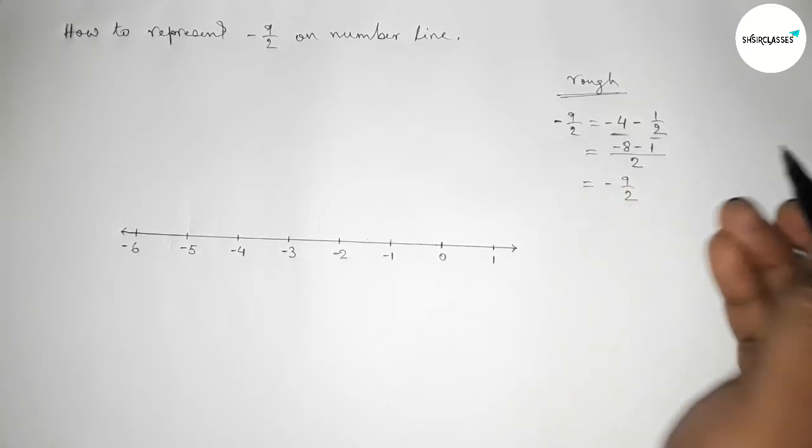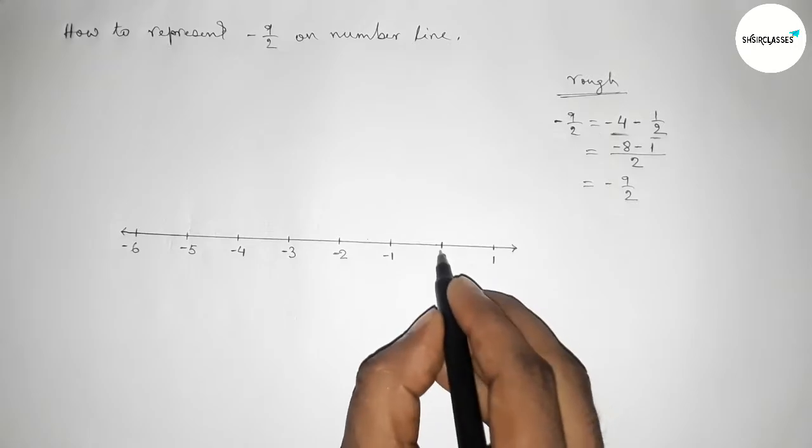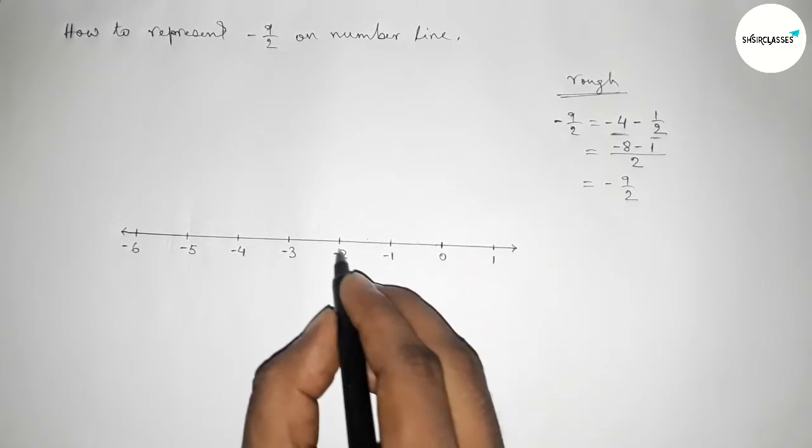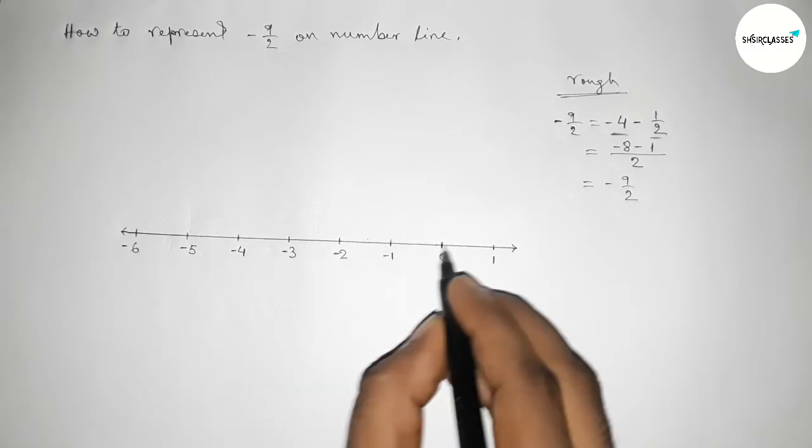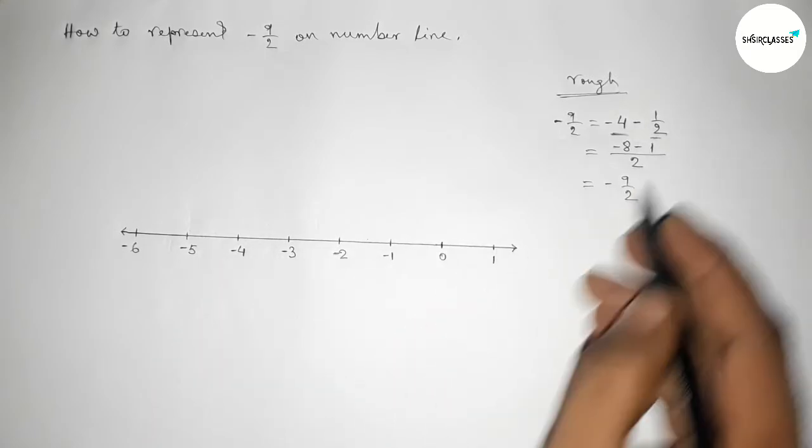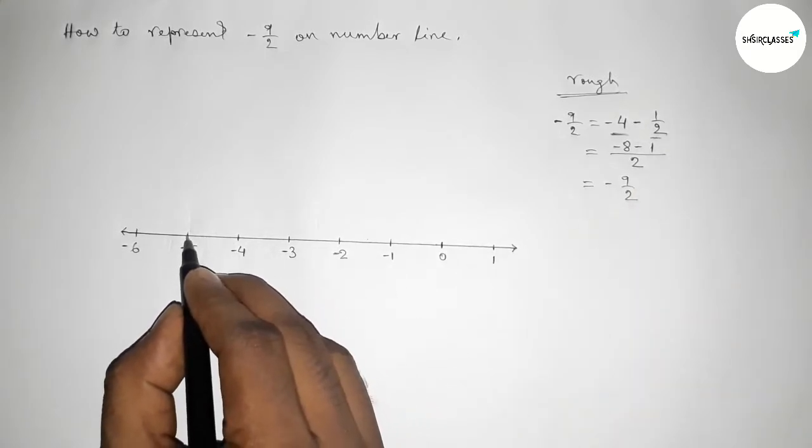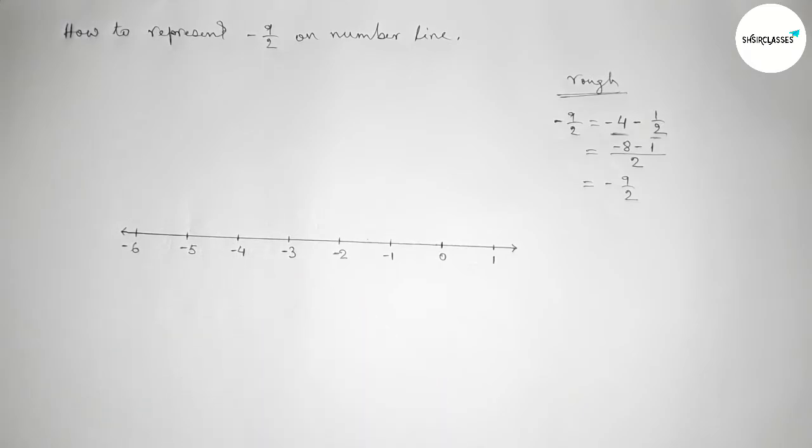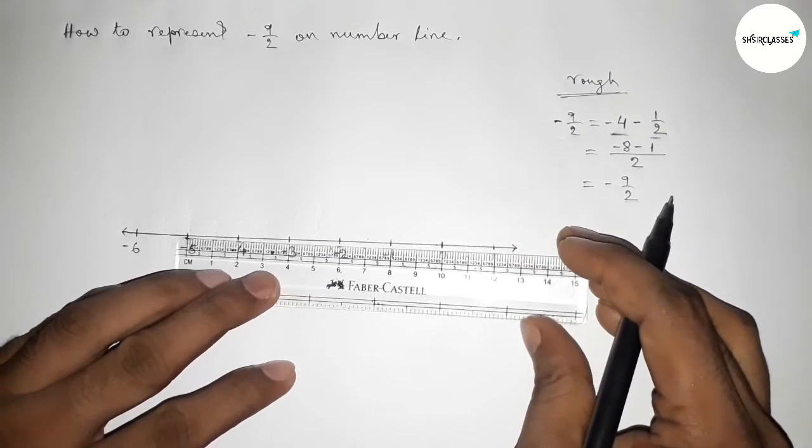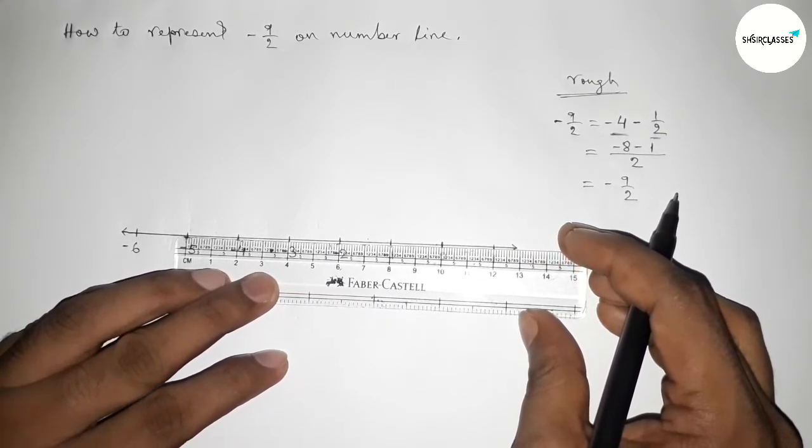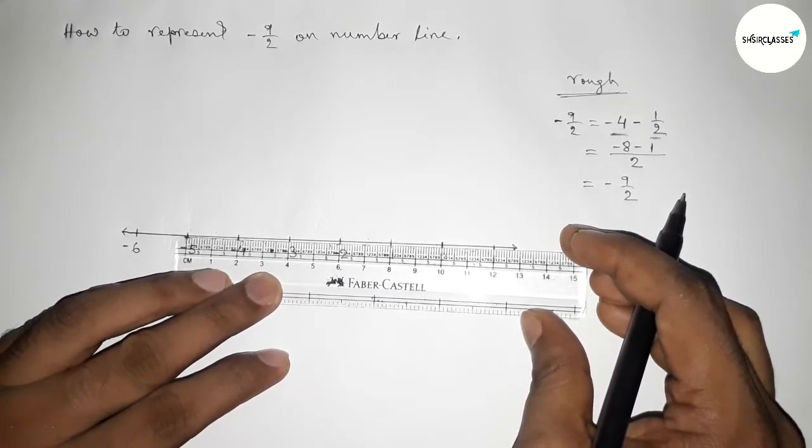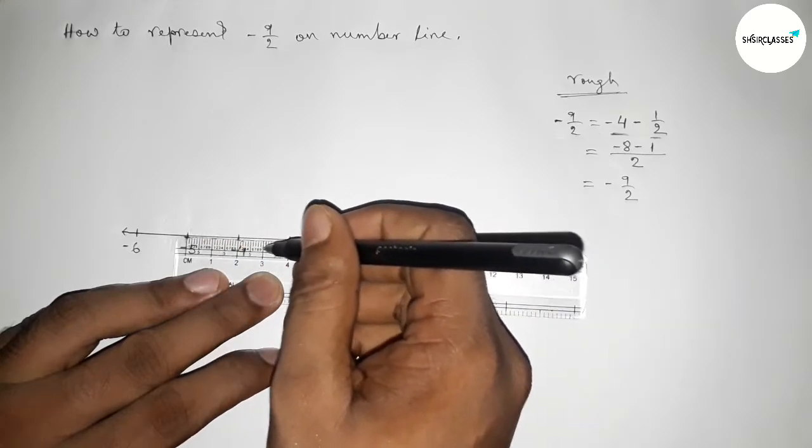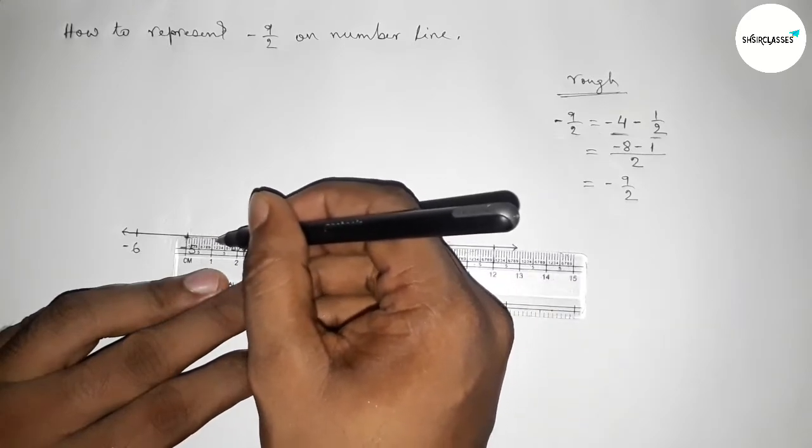So first we have to find the length minus four first, so from zero to minus four this is minus four. And now we have to find minus one by two, minus one by two between minus four and minus five. So now finding the middle point between minus four and minus five by using scale.